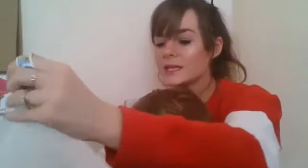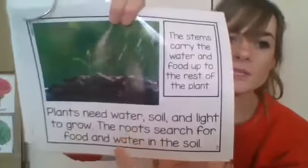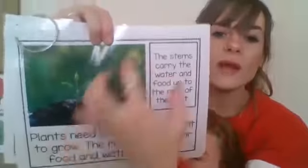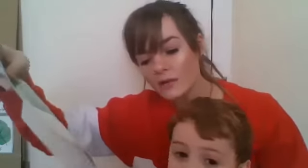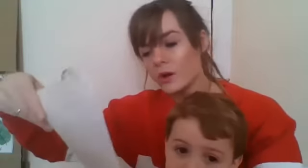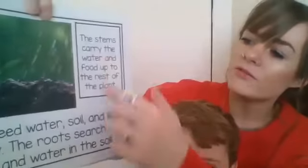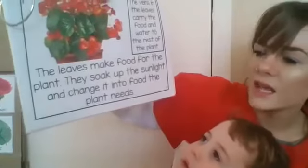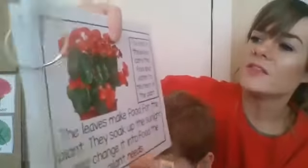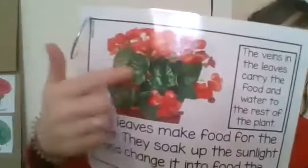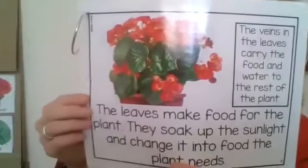Plants need water, soil, and light to grow. The roots search for food and water in the soil. It's really important that these plants get rain because they need water to grow. If it doesn't rain a lot, you can go outside with a watering can and pour water onto the plant to help it grow. The stems carry the water and food up to the rest of the plant. The leaves make food for the plant — they soak up the sunlight and change it into food. The veins in the leaves carry the food and water to the rest of the plant so that it can grow.